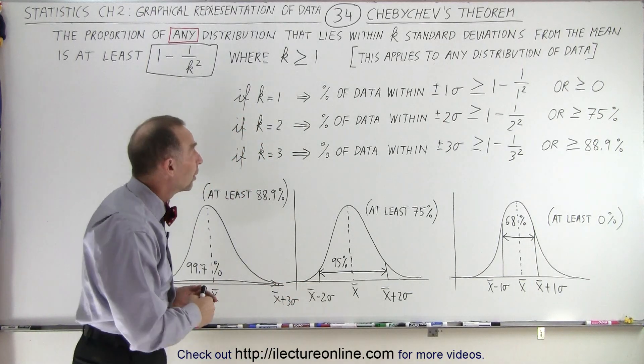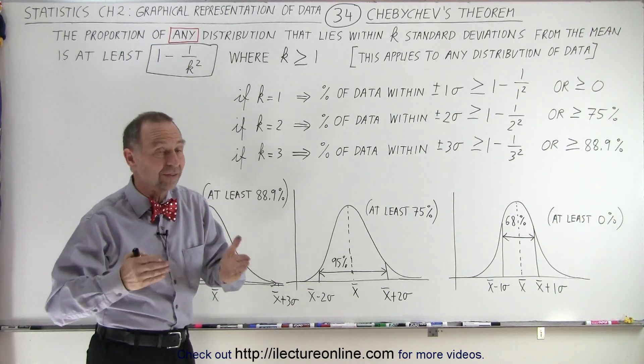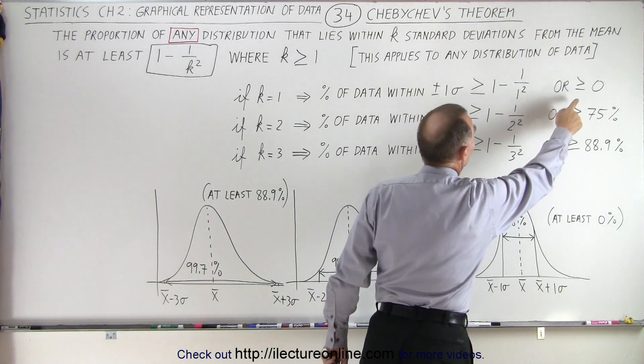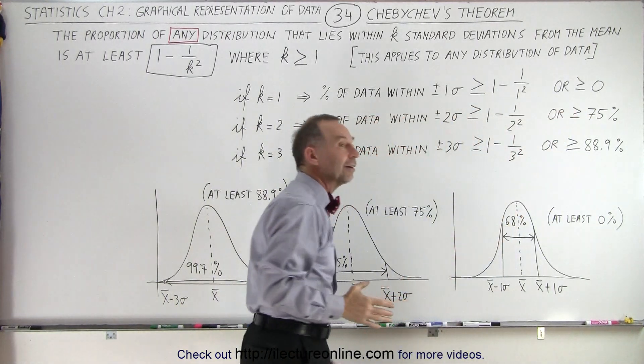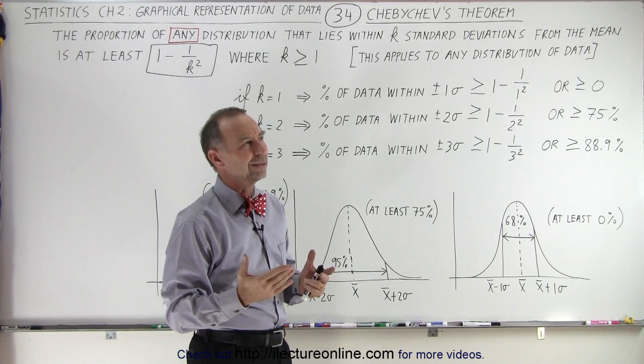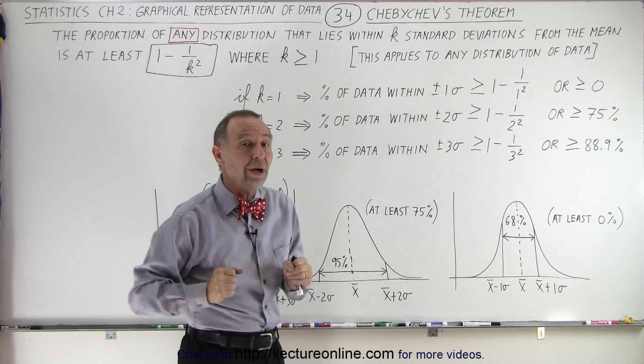So what does that mean? Well, if k equals one, meaning plus or minus one sigma or one standard deviation, Chebyshev said that at least 0% of the data falls within that. It could be more, but it's at least zero. So that doesn't make a lot of sense—at least it's not that useful for plus or minus one.